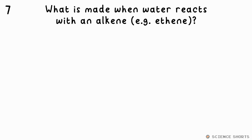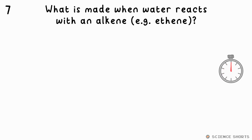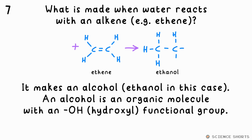Question 7. What happens when water reacts with an alkene? It makes an alcohol. The H and OH from the water bonds with the hydrocarbon to give that OH group — that's a hydroxyl functional group, which means it's an alcohol.